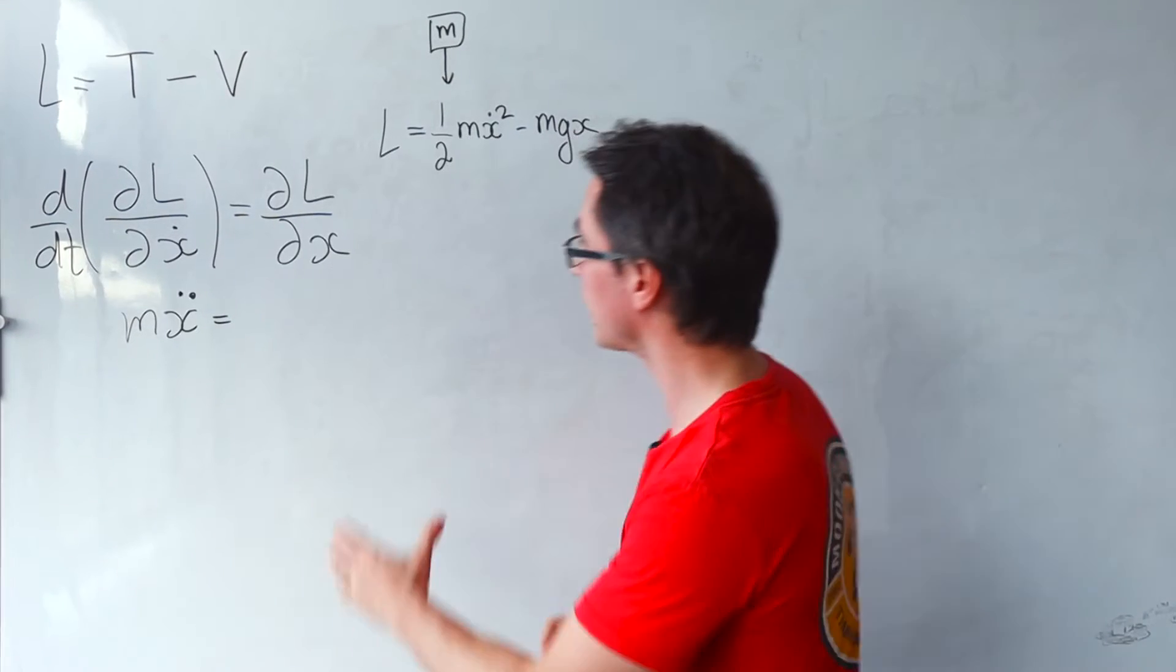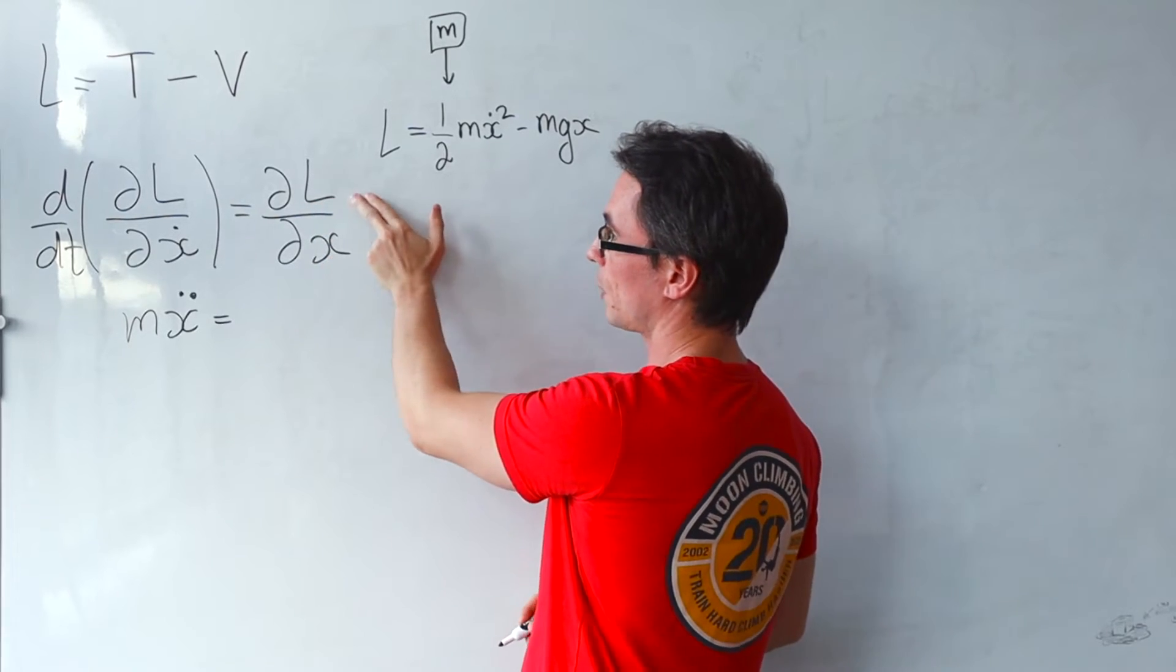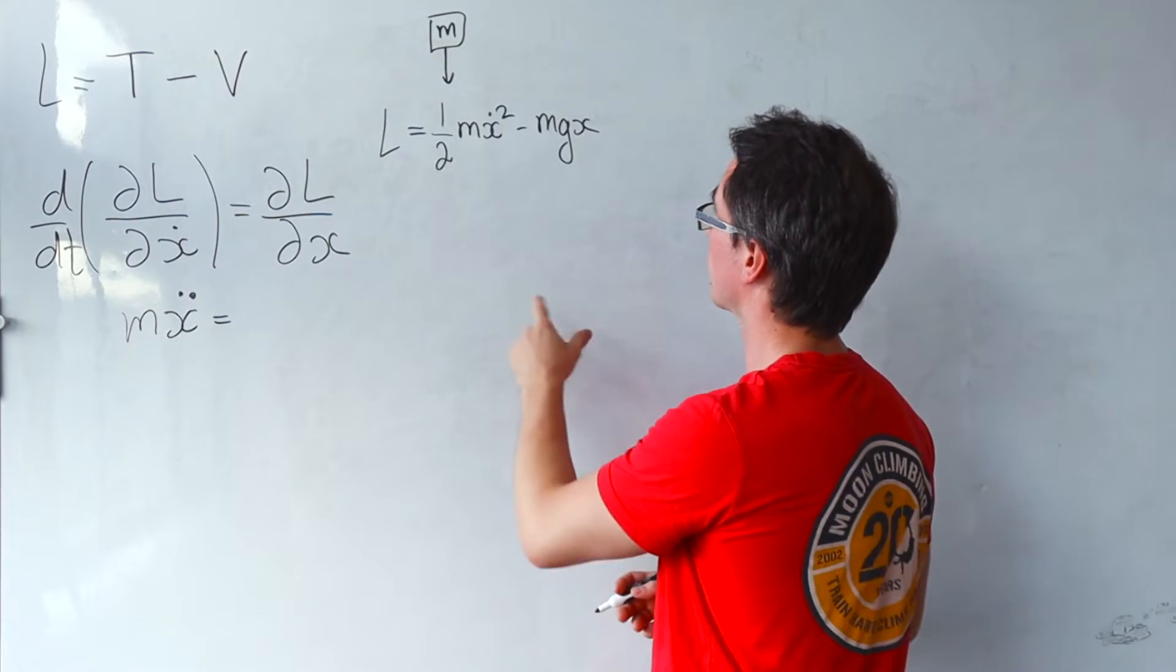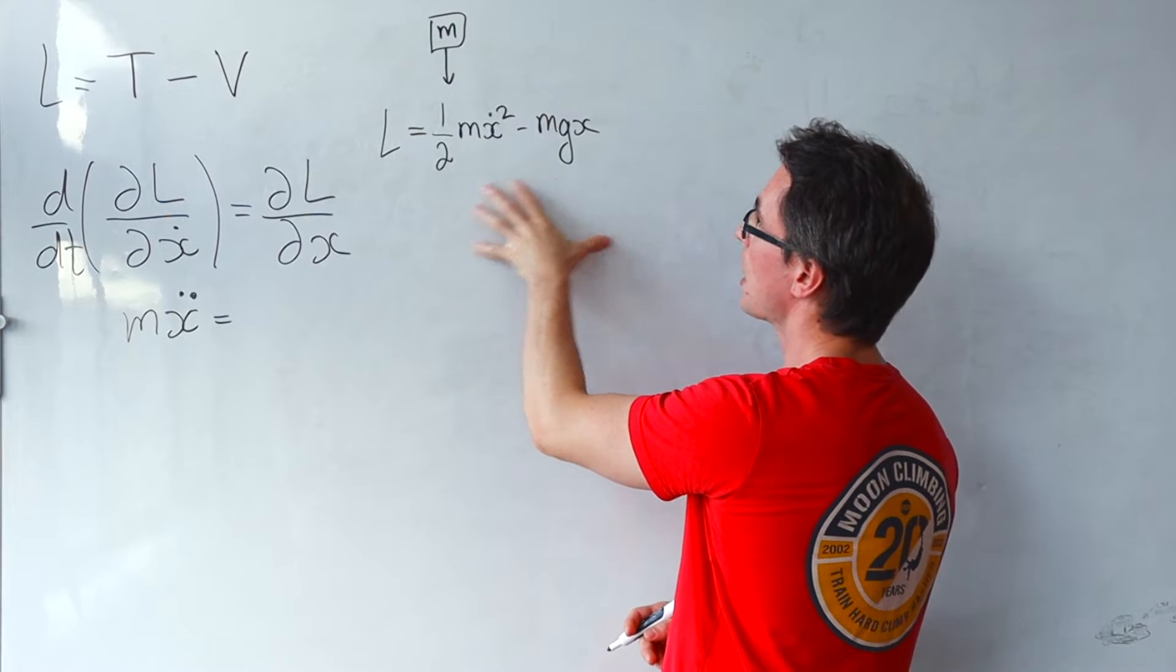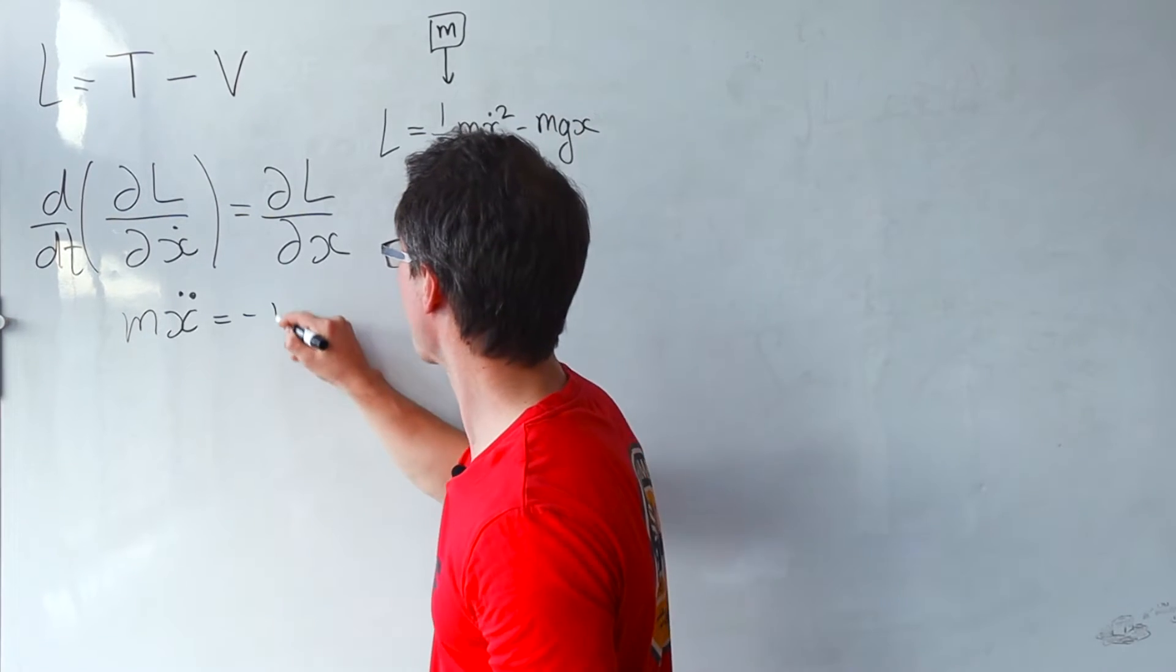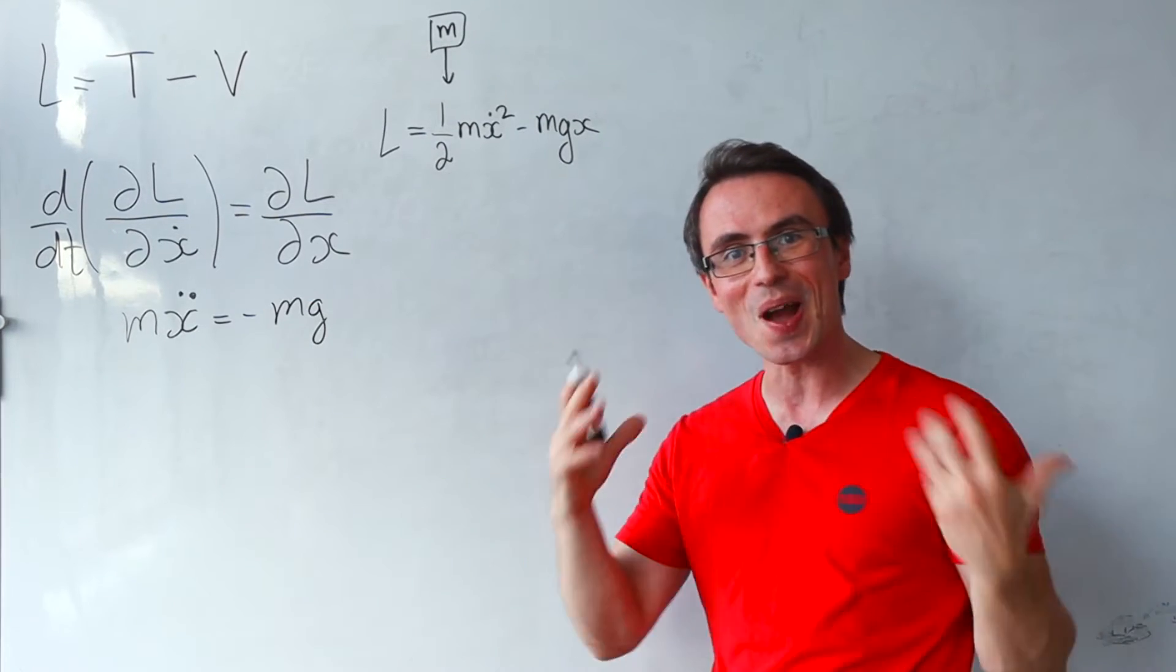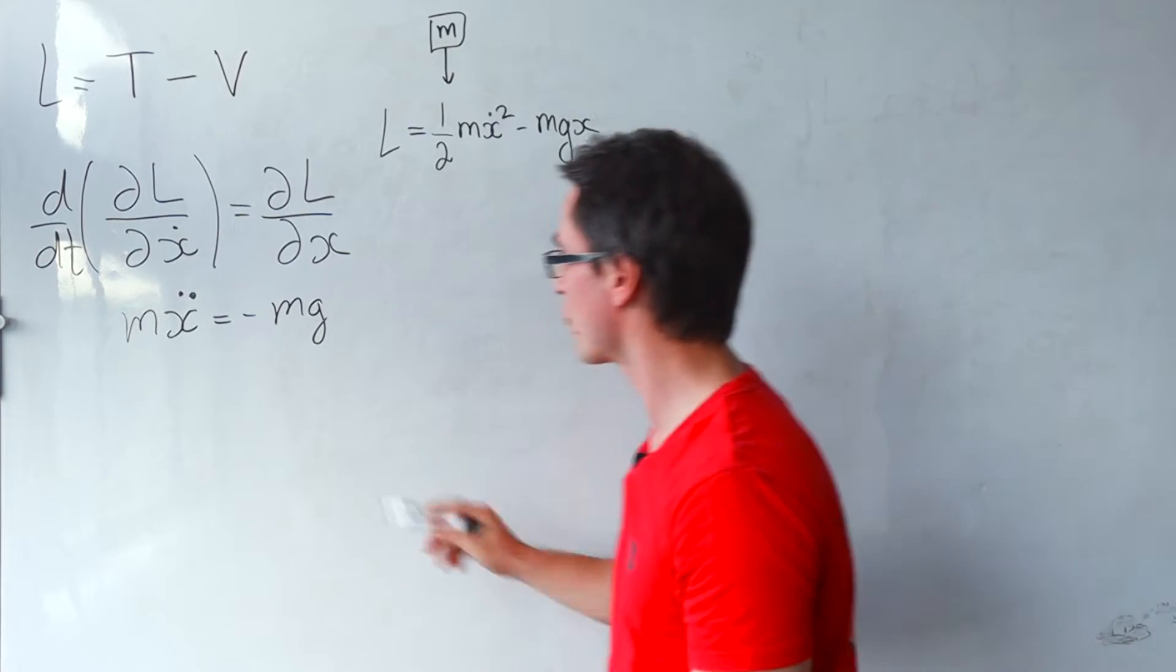Okay, well, this thing here will be equal to the partial derivative of the Lagrangian with respect to the X coordinate. So now the left-hand side will be treating that as a constant, and what we're going to be left with is just minus MG. Well, this right here is actually our very equation of motion that we've just figured out.